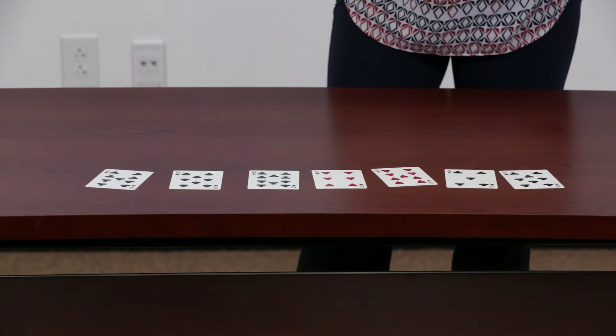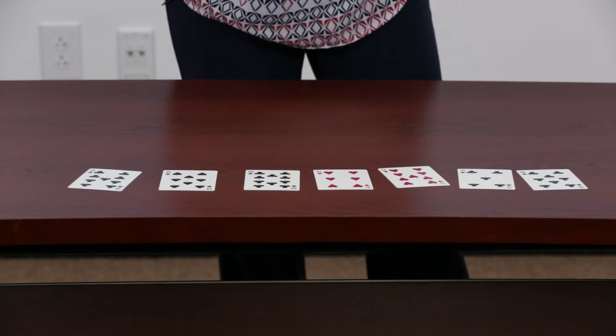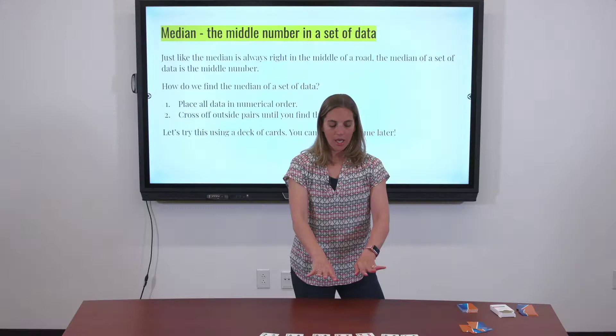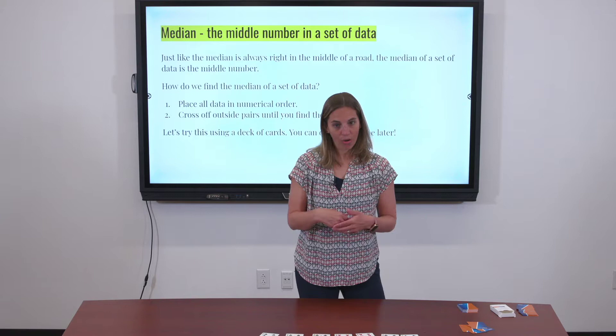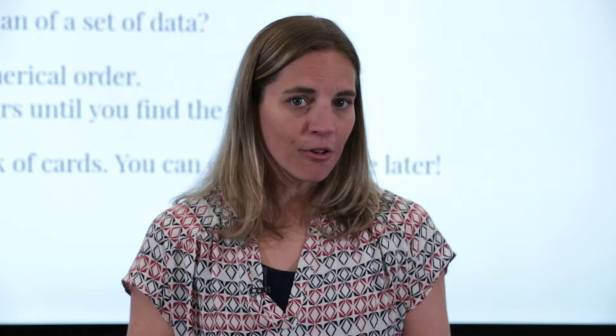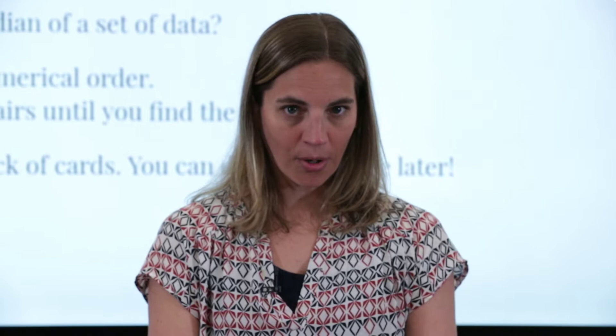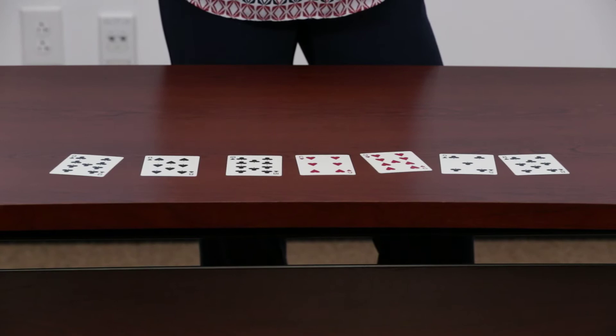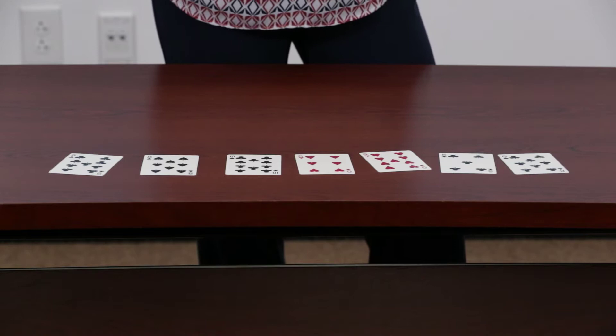Think about step one — we need to put everything in numerical order. On your paper, take just a second and write the numbers in numerical order. Remember, if you have more than one number that's the same, you need to include both of them. I noticed I have two eights — I need to make sure I keep both of those eights in my data.